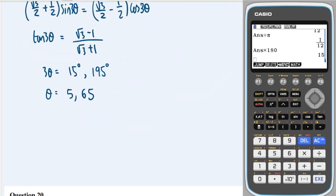So actually, I should have added another 180 here to make 375, because that is still within the 3θ range. Dividing that through by 3 is going to give me 125. So these are my three solutions.